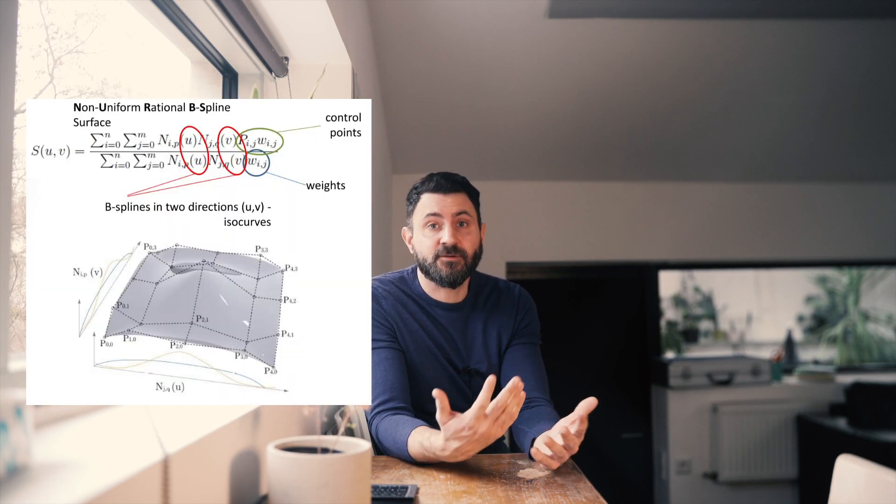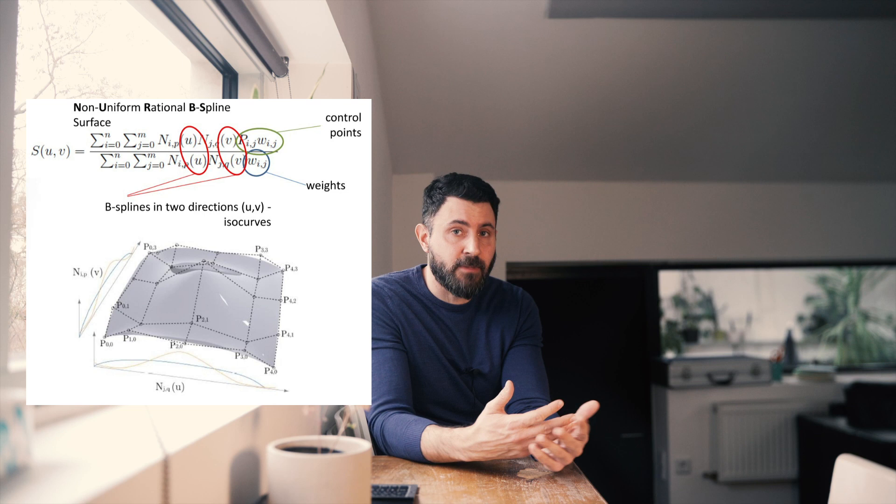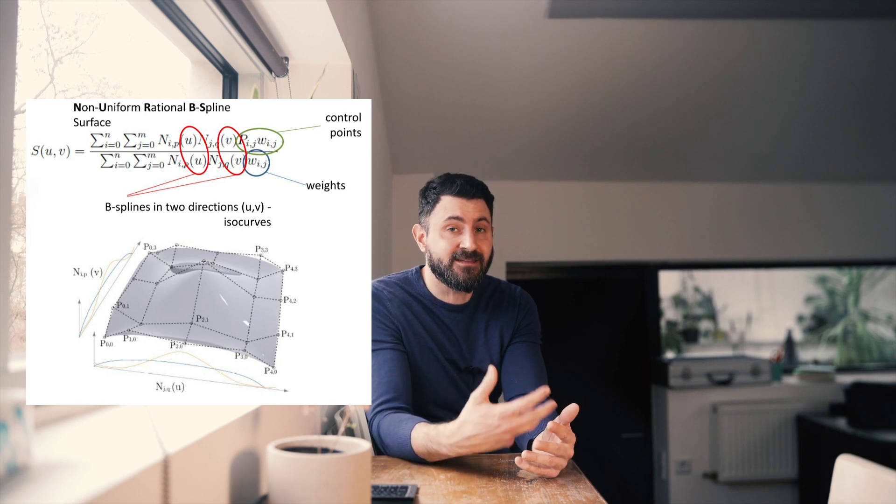Rhino is a NURBS modeler, and NURBS curves and surfaces are polynomials — mathematical concepts and formulas that can in theory create infinitely precise curves and surfaces. However, our world is discrete, and if we want to do any mathematical operation or visualize geometry on the screen, we need to render it into discrete representations and eventually show them using pixels as discrete elements.